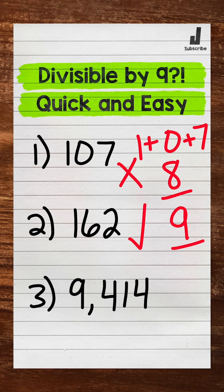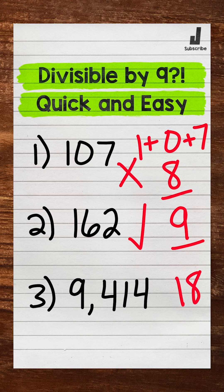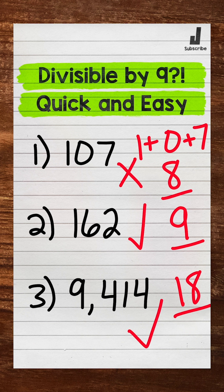For 9,414, we have 9 plus 4 plus 1 plus 4. That equals 18. 18 is divisible by 9, so 9,414 is divisible by 9.